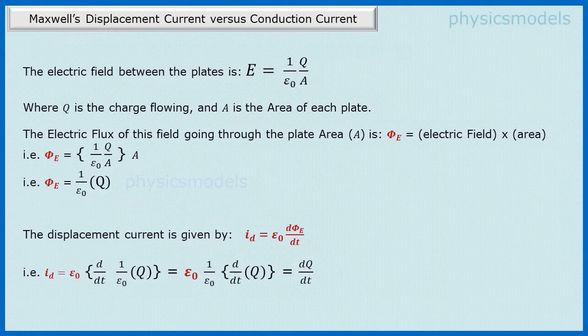Maxwell's equation says that the displacement current I_D is equal to epsilon naught times d by dt of electric flux. The d by dt comes because flux is changing with time. If we substitute into this equation, we will see that epsilon naught and epsilon naught cancel, and we get the displacement current I_D equals dQ by dt.